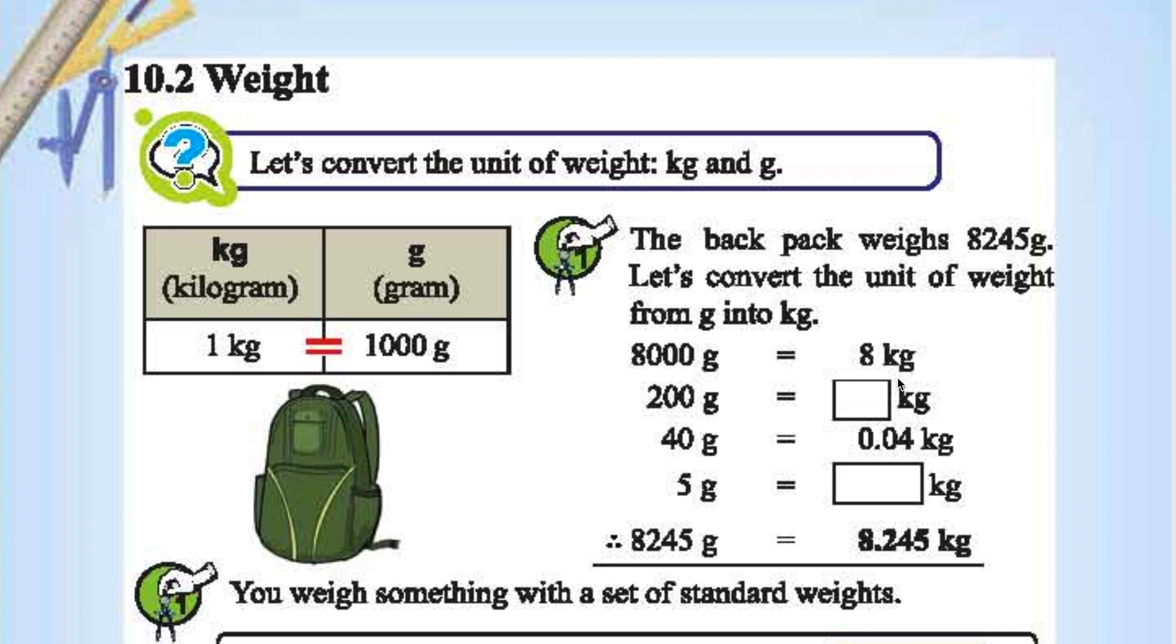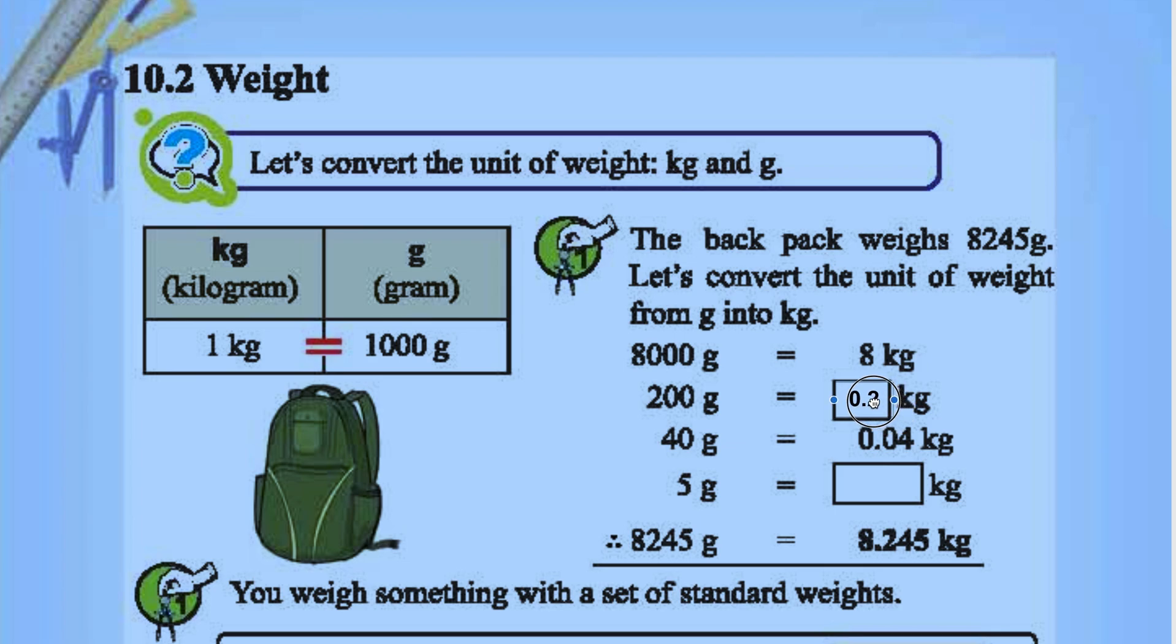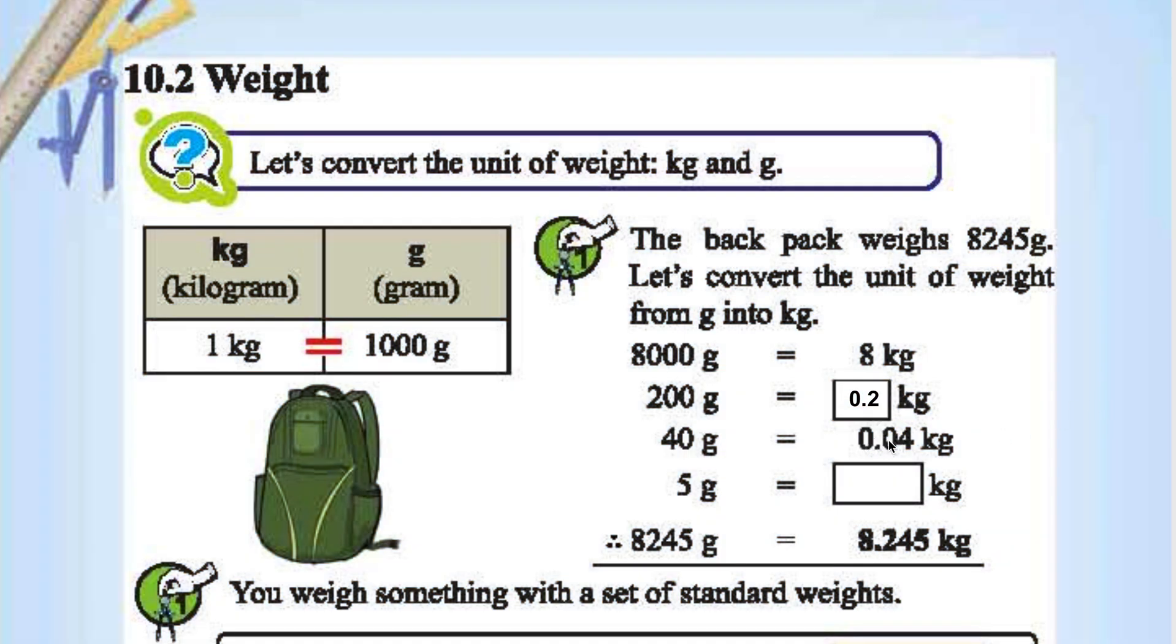8000 grams is 8 kg. 200 grams is 200 by 1000, that is 0.2 kg. 40 grams is 40 by 1000, 0.04 kg. At last, 5 grams is 5 by 1000, that is 0.005 kg. The sum total is 8.245 kg.